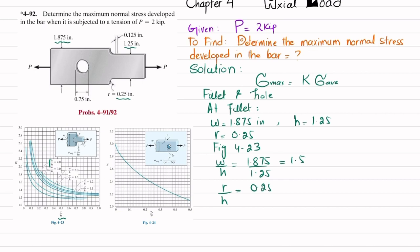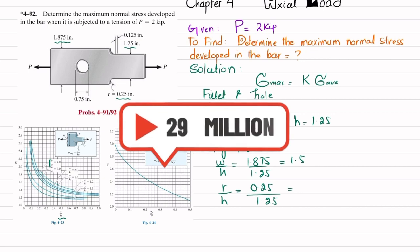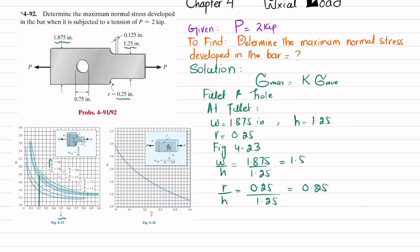w/h: w is 1.875 divided by h which is 1.25, giving you 1.5. r/h: r is 0.25 and h is 1.25, that will give you 0.2. So r/h is 0.2, which is this point. If you draw a vertical line from 0.2, it will intersect the curves. We will search for w/h = 1.5.